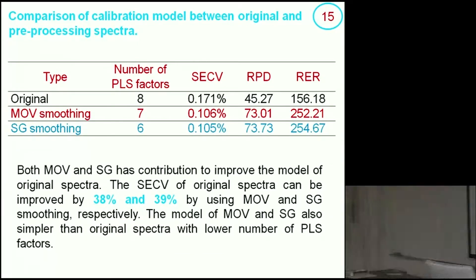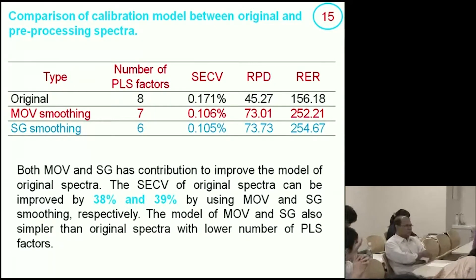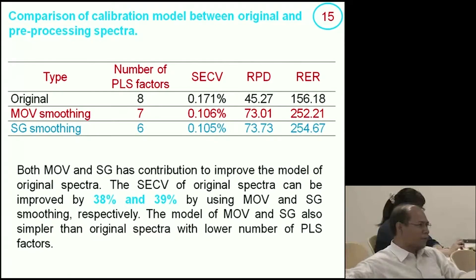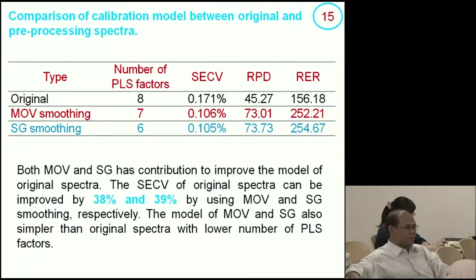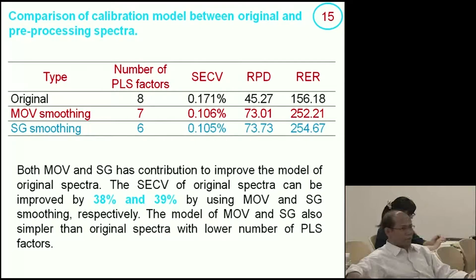I want to add a comment. To me, robustness is something concerned with speed. In your case, you show us more accurate results with the smoothing method — it gives better, more reliable prediction. But what about robustness specifically? What does it mean in this case?